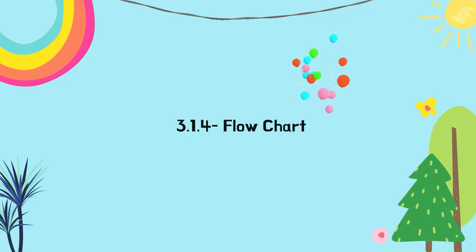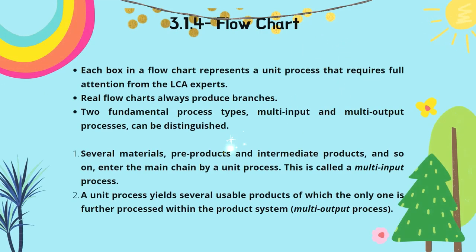The fourth sub-topic of this chapter is the flow chart. Each box in the flow chart represents a unit process that requires full attention from the LCA expert. The real flow chart always produces branches and there are two fundamental process types. The first is the multi-input process: several materials, pre-products, and intermediate products can enter the main chain by a unit process. The second is the multi-output process: a unit process yields several usable products, of which only one is further processed within the product system.